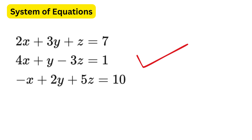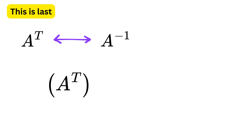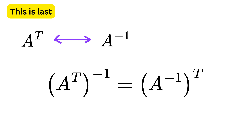We can do the same for a system of equations with three variables. Finally, there is one important relation between the transpose and inverse of a matrix. If a matrix A has an inverse, then taking the transpose of A and then finding its inverse is the same as first finding the inverse of A and then taking its transpose. In simple words, the order of taking inverse and transpose does not matter — the result will be the same.